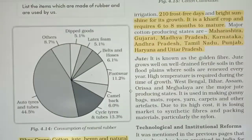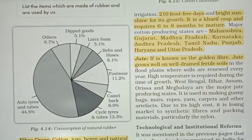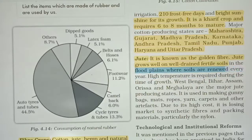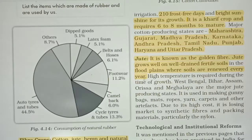Next is jute. It is known as golden fiber. Jute grows well on well-drained fertile soils in flood plains — the plains formed by soil deposited by floods or rivers. The soils are renewed every year.